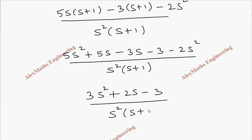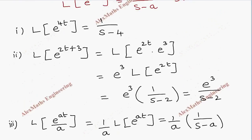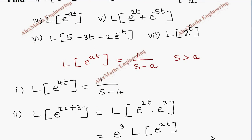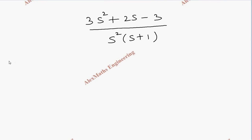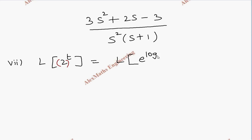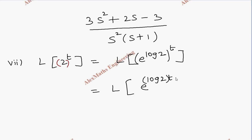For the seventh subdivision we have L{2^t}. We rewrite 2 as e^(log 2), since e and log cancel leaving 2. So 2^t = e^(t·log 2). Using the exponent rule, this becomes L{e^(t·log 2)}. Now log 2 plays the role of a, and using the formula for L{e^(at)}, the transform is 1/(s - log 2).